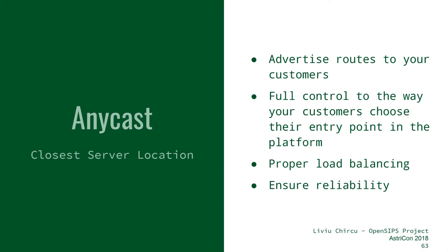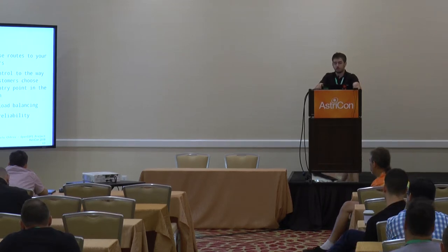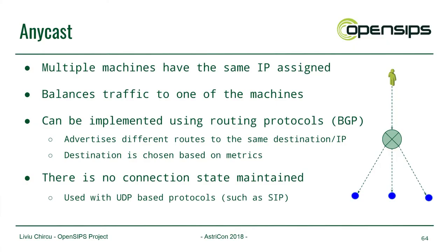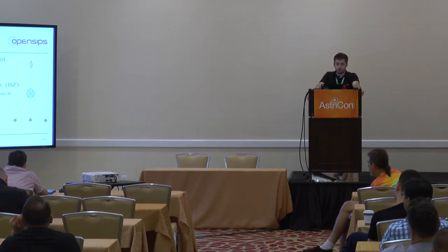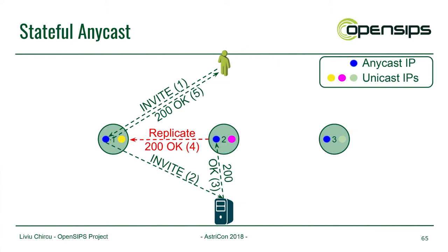Anycast basically allows you to fully control how traffic is routed within your platform. You can use it to either obtain high availability or to load balance traffic towards or within locations. How it works: you have multiple machines with the same IP, with anycast-capable routers that communicate using routing protocols like BGP. They share routes and path metrics between them such that they choose the proper destination according to the current state of the system.